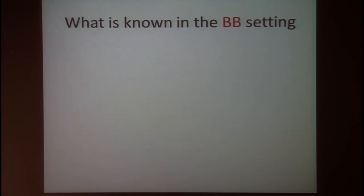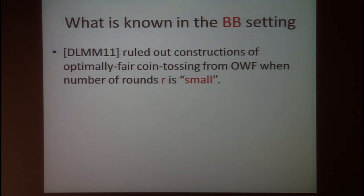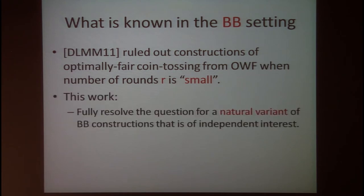In previous work, we ruled out black box constructions of optimally fair coin tossing from one-way functions, but only when the number of rounds is small. In this work we fully resolve the question for any number of rounds, but only for a natural variant of black box constructions — function oblivious protocols — which we believe may be of independent interest.